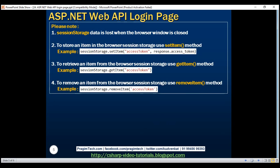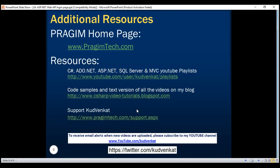Session storage data is lost when the browser window is closed. To store an item in browser session storage, use the setItem method — we've just seen how to do this. To retrieve an item, use the getItem method, passing the key used to store the item. To remove an item, use the removeItem method. We'll discuss using getItem and removeItem in our next video when we implement data.html.